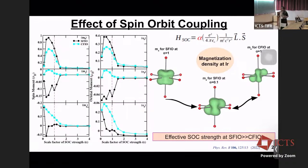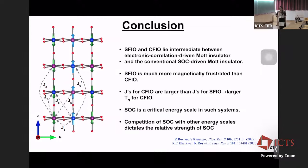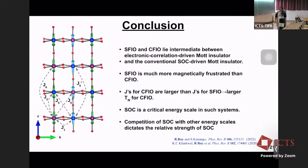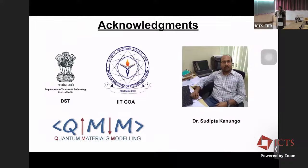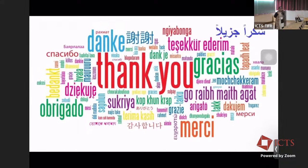In conclusion, both SFIO and CFIO lie intermediate between an electronic-correlation-driven Mott insulator and a conventional SOC-driven Mott insulator. SFIO is magnetically more frustrated than CFIO, and the larger exchange interaction values in CFIO establish its higher transition temperature. SOC is a critical energy scale in such systems, and its competition with other energy scales — particularly structural distortions — dictates its relative strength. I would like to acknowledge DST and IIT Goa for financial support, and my supervisor Dr. Shudeepto Kanungo for his valuable contributions. Thank you all for your patience.